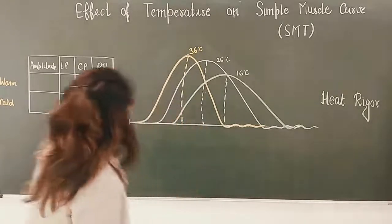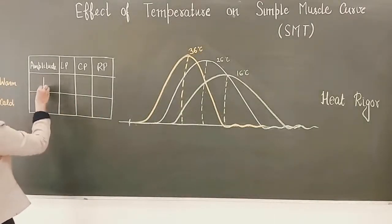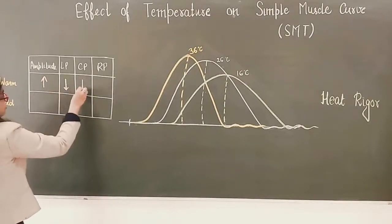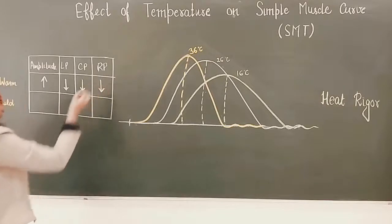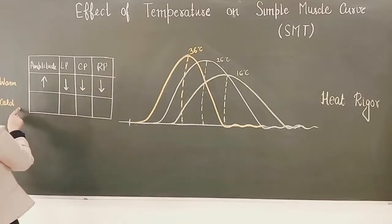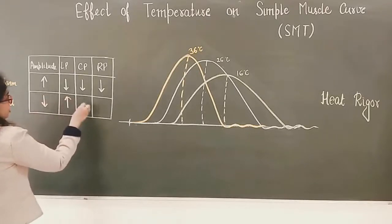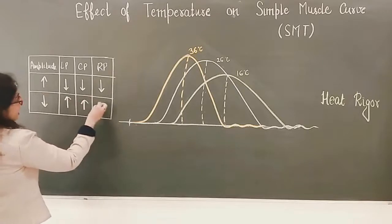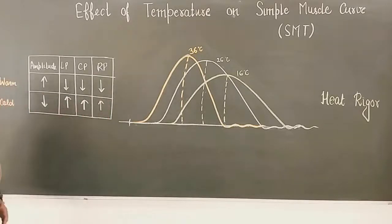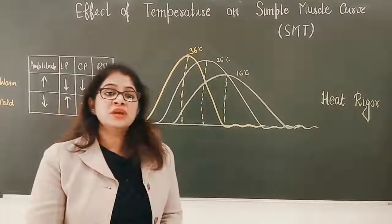To summarize: on pouring warm saline, amplitude of contraction has increased, and the latent phase, contraction phase, and relaxation phase duration have decreased. On pouring cold saline, amplitude has decreased, and the latent phase, contraction phase, and relaxation phase have all increased in duration — meaning the contraction has become slow.